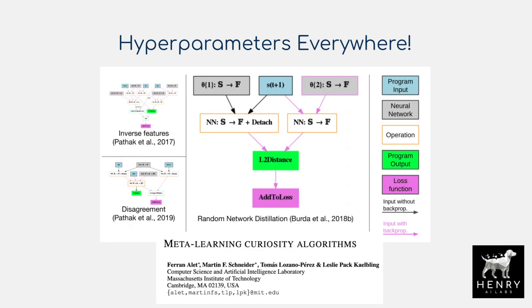Another interesting example is the paper 'Meta-Learning Curiosity Algorithms,' where you're not just putting together blocks for neural architecture search — it's about routing an algorithm that has this intrinsic algorithm exploration search reward. There are so many creative ways to apply these AutoML approaches, design these search spaces, and use black box optimization algorithms to design optimal configurations of different parts of the deep learning training process.